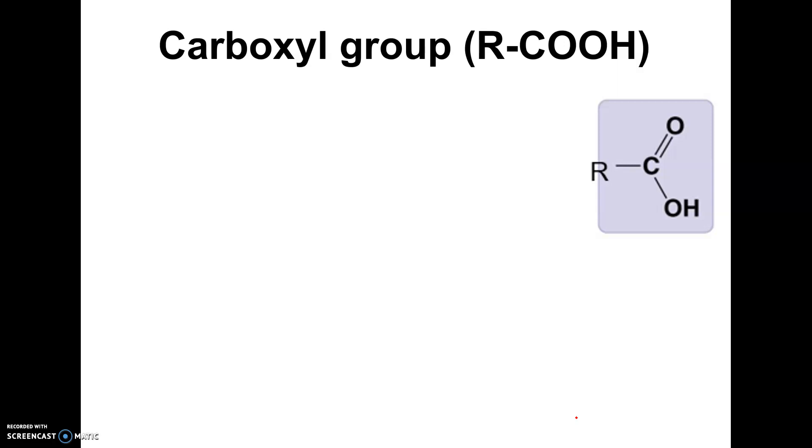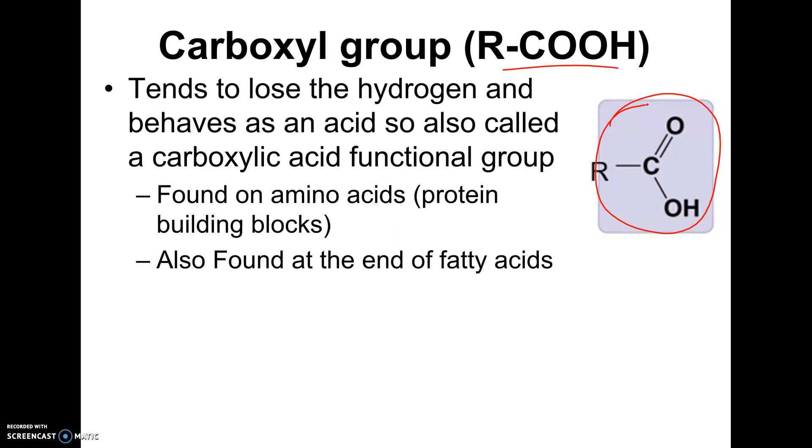All right, the next one is a carboxyl group. So this is sort of the shorthand way of writing it, but this is the Lewis structure. Three-dimensionally, it looks like this. So it's carbon double bonded oxygen, but with an OH there. And it turns out this has another name. It's also called a carboxylic acid group, and that's because it tends to lose this hydrogen. It breaks off, and so it's behaving as an acid, because remember, that's what acids do. They give up hydrogens or add hydrogens in a solution.